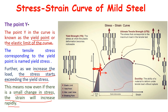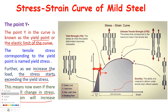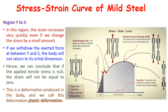So what is the yield point? It is the point where necking or deformation of the material just starts. The stress corresponding to the yield point is called yield stress. At this point, a small change in stress leads to a large or rapid increase in strain.